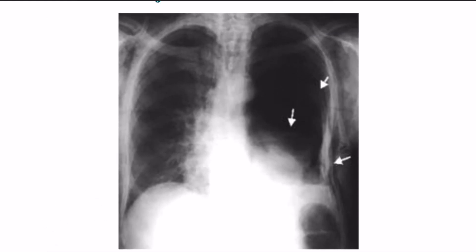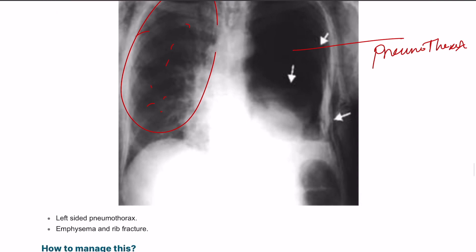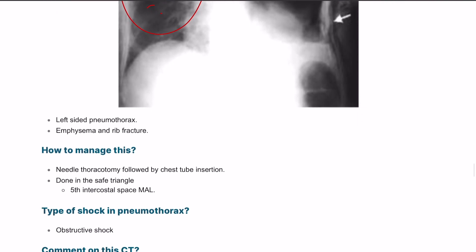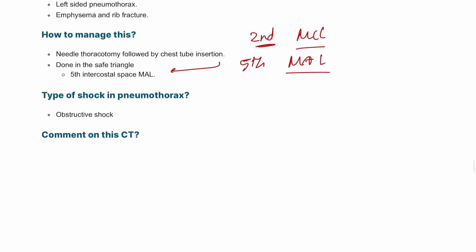Looking at this chest X-ray, you can see vascular markings with white dots over the right lung, but the other lung is all black — that would be a pneumothorax. The trachea is not clearly visible, suggesting poor image quality, but this is a pneumothorax. In terms of management, if the patient is respiratory compromised, perform needle thoracocentesis at the second intercostal space, mid-clavicular line, and later insert a chest drain at the fifth intercostal space, mid-axillary line — the safety triangle.